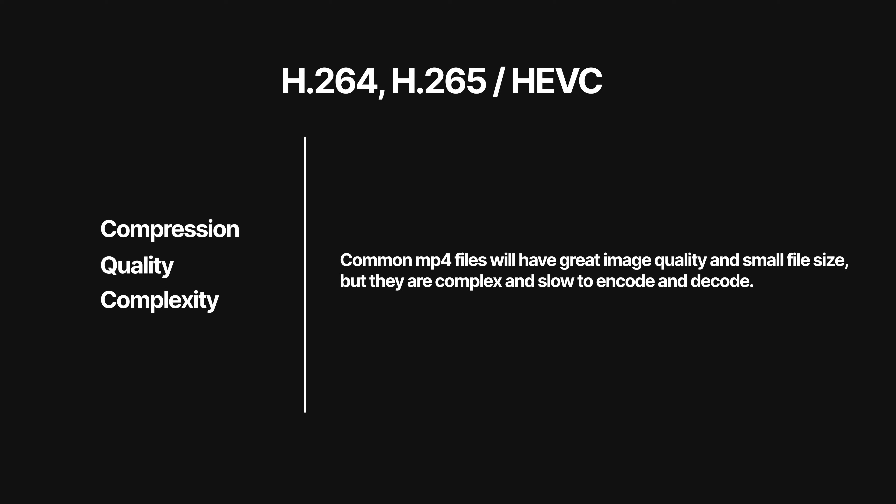Any iPhone, GoPro, or other consumer camera, for example, will give you videos using either H.264 or H.265, also known as the HEVC codec. These codecs give you great image quality at low data rates, so they prioritize compression and quality. The trade-off is complexity, which means that editing these videos is pretty taxing on your computer.